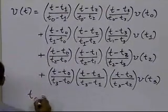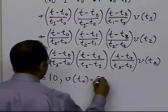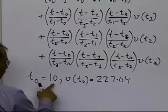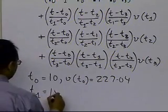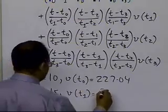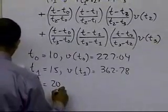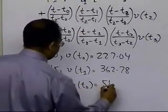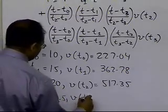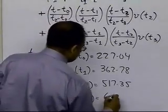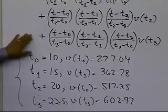Going back to what we had said: t0 is 10, and the value of the velocity at t0 is 227.04. Wherever there is t1, which is 15, you substitute the velocity at t1, which is 362.78. Wherever there is t2, you substitute 20, and the velocity at t2 is 517.35. And wherever there is t3, which is 22.5, you substitute the velocity at t3, which is 602.97.